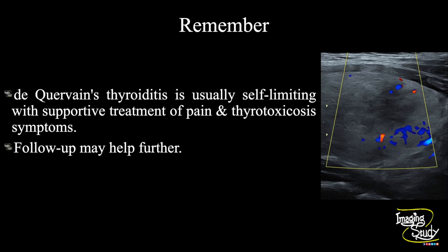Now the take-home message: Dequervain's thyroiditis is usually a self-limiting condition. Proper supportive management for pain and thyrotoxicosis features should be given. You can do a follow-up scan, and on follow-up, the thyroid parenchyma will show a normal echotexture.